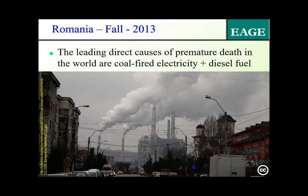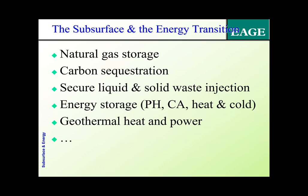Low and middle income countries suffer from the highest exposure. This image from Romania shows coal-fired power plants emitting water vapor, but in that vapor are also large amounts of PM 2.5 — the fine-grained particulate matter mainly responsible for premature deaths. The subsurface can help us: we can do natural gas storage, carbon sequestration, secure liquid and solid waste disposal, energy storage via pumped hydro and compressed air, store heat and cold, store hydrogen, and access geothermal heat and power.